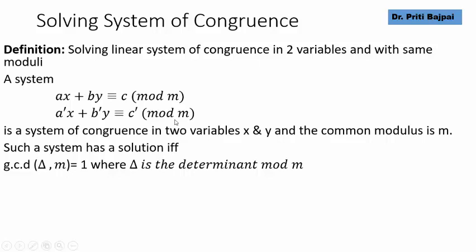In other words, whenever the gcd of the determinant and the modulus is 1, then the solution is solvable.